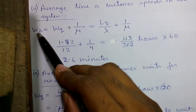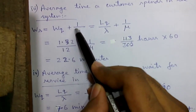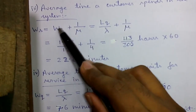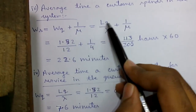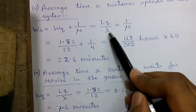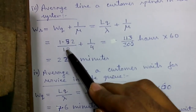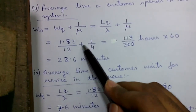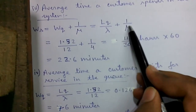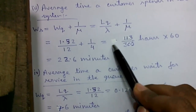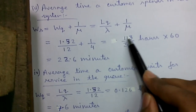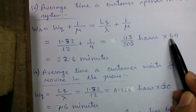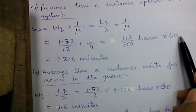Average time a customer spends in the system: Ws = Wq + 1/μ. And Wq = Lq/λ = 1.52/12. So Ws = 1.52/12 + 1/4 = 113/300 hours = 22.6 minutes.